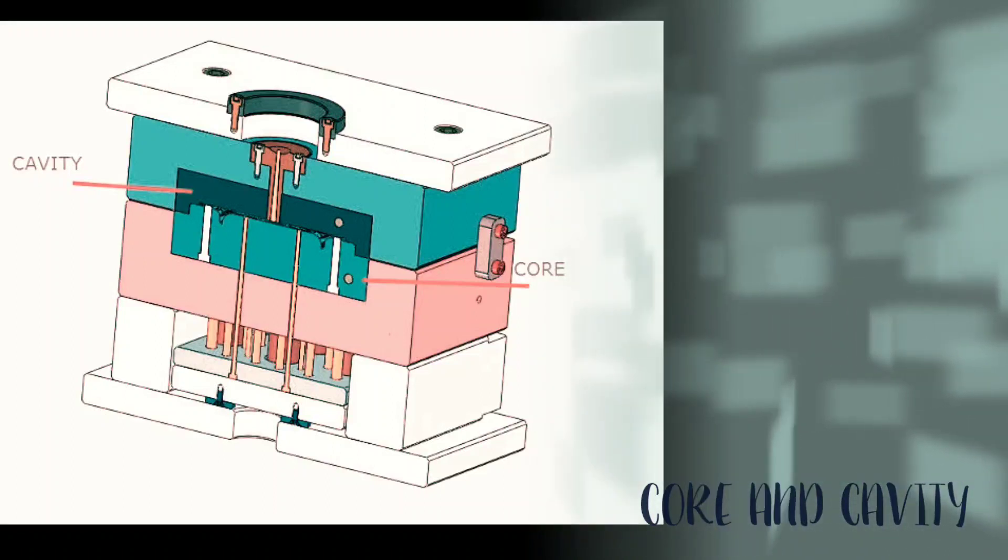Cavity is a depression portion of the mold which creates the external plastic part surface. Just opposite of core, the cavity is our external part that touches our plastic product. The final plastic product's external layer comes from the cavity. The external surface is formed by the cavity.